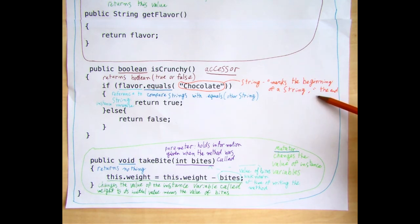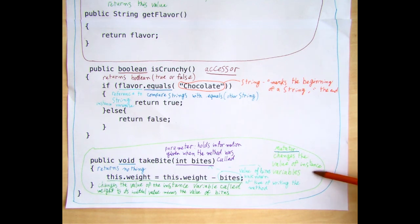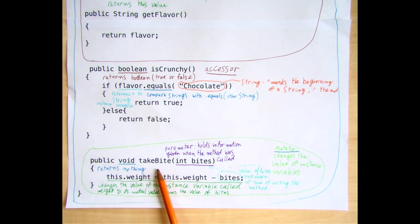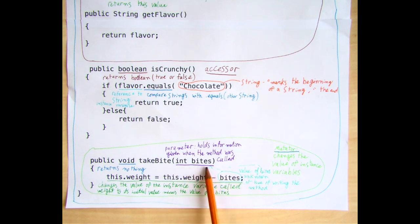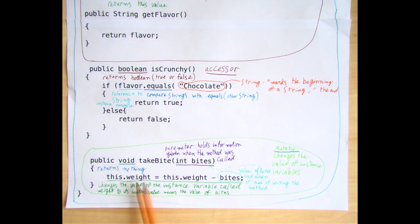Lastly, classes often have mutators, which are generally used to change the value of the instance variables. It's very nice to have a biscuit, but what if you're eating it? For that we have the method 'public void takeBite'. 'Void' means that the method returns nothing — you don't need to receive any information when you take a bite of a biscuit, you simply need to make the biscuit smaller. What you do need is to know how much of the biscuit you're taking off. So 'takeBite' has a parameter inside the brackets — when it is called, it will be given a number, which we'll call 'numberOfBytes'. What the method does is set the instance variable 'this.weight' to its old value, 'this.weight', minus the value of 'bytes', which is the parameter the method receives.